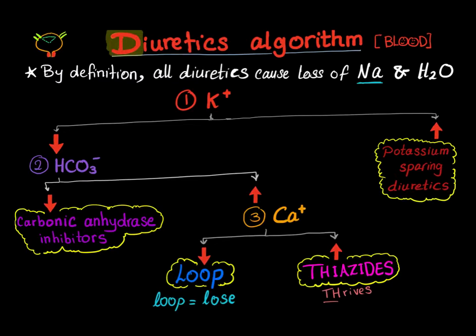We have four diuretics: potassium-sparing diuretics, carbonic anhydrase inhibitors, loop diuretics, and thiazide diuretics. We're not talking about mannitol in this video.